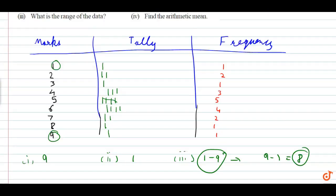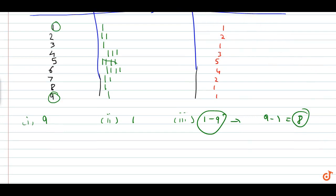What is the arithmetic mean? We add all the numbers: one plus two plus three plus four plus five plus six plus seven plus eight plus nine. The total divided by nine.